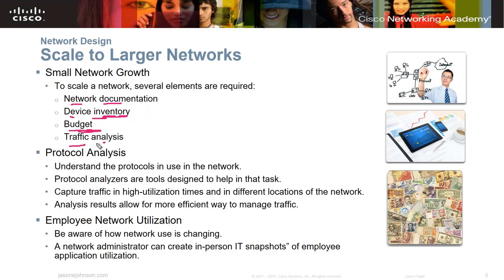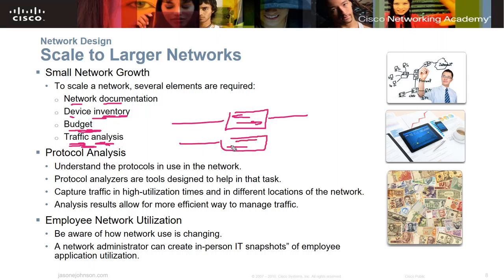Budget and traffic analysis also come into play. If a switch is getting bogged down and bandwidth can't handle it, you might put another switch in place. For example, if engineers are sending large CAD drawing files to the cloud, you could put them on a separate switch so their bandwidth usage doesn't impact the rest of the company. That's one example of how you might analyze and segment traffic.